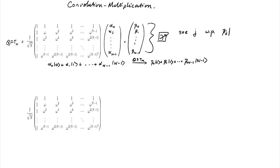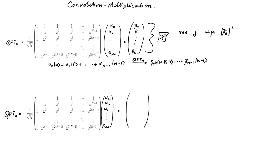We see index j with probability |beta_j|². Now let's do a slightly different experiment. We again use a quantum Fourier transform, but now we take our input and shift it cyclically — shift everything down one step: alpha-naught, alpha-1, ..., alpha n-minus-1 — and then wrap around so alpha_n goes to the top.